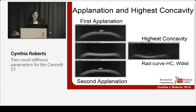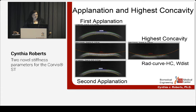Previous to this meeting, the parameters produced by the Corvis actually surrounded three particular points within the deformation process: first applanation — time, velocity, and length; second applanation on the way out during recovery — time, velocity, and length; and then the highest concavity moment in the middle of the deformation, where you can see multiple parameters, including the radius of curvature of the concave cornea.